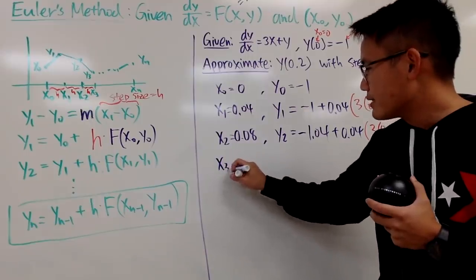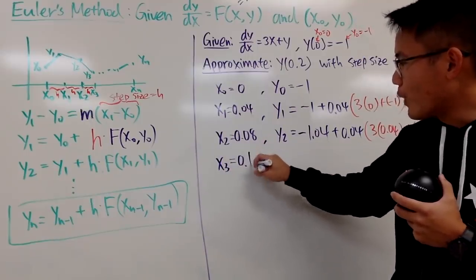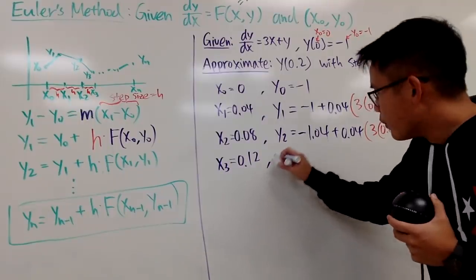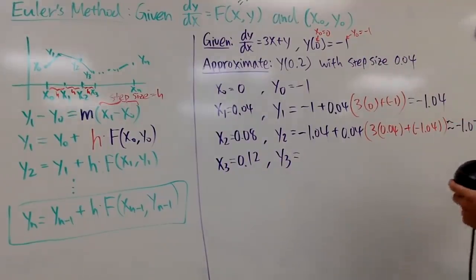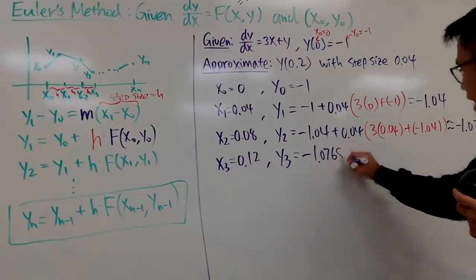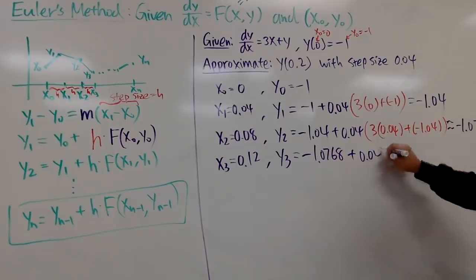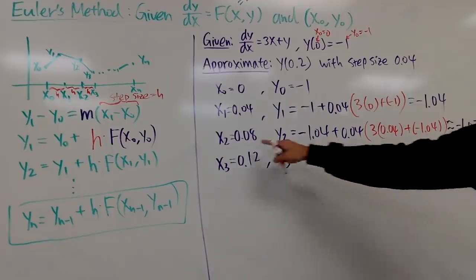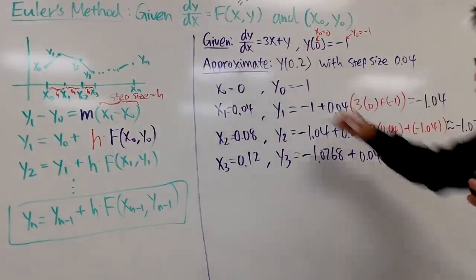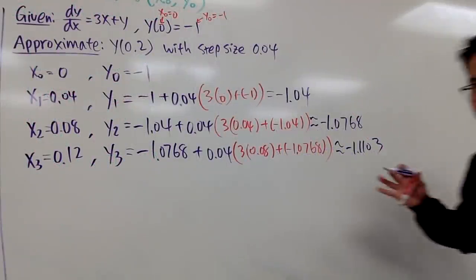You continue. x3 equals 0.12. For y3, look at your previous y value, which is negative 1.0768, and add it with 0.04 times — plugging x2 = 0.08 and y2 = negative 1.0768 into the differential equation — 3 times 0.08 plus negative 1.0768. Do it on your calculator, and you get approximately negative 1.1103.